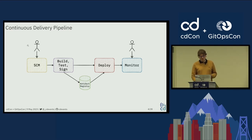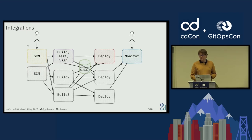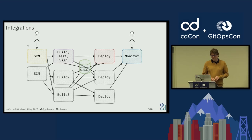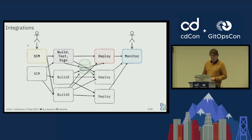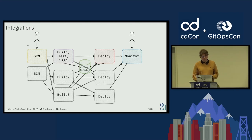Then you have some deployment phase that finally goes into production where monitoring kicks off. This may be the pipeline simplified for a single artifact. But if you have more than one artifact and more than one team, you may end up with more than one SCM tool, multiple build steps, and different deployment approaches — and building integrations between all these different tools becomes too complex to maintain.